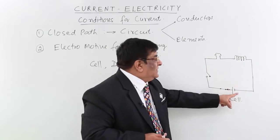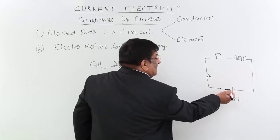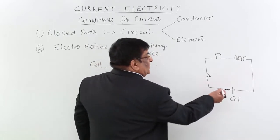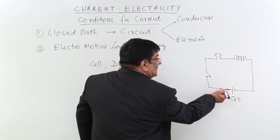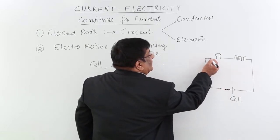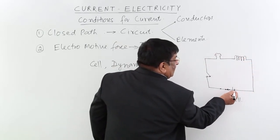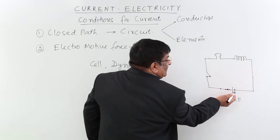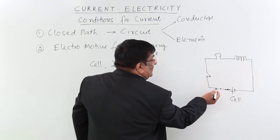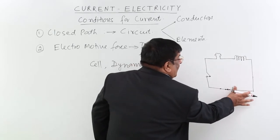This is a device — a cell which has energy, and with this energy it continuously pushes the charges out, giving them a certain energy. So what do they do? They move in the conductor, they move in the conductor, and again they come back here. When they reach here again, this cell gives them energy and again they move. So the cell is like a pump of energy.